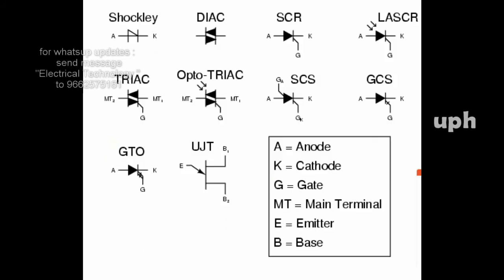Thyristor family includes: SCR (silicon controlled rectifier), DIAC (diode AC), TRIAC (triode AC), GTO (gate turn-off thyristors), MCT (MOS controlled thyristor), RCT, PUT, UJT, LASCR, LASCS, SIT, SITH, SIS, SBS, SUS, and EDC. All these devices together are called thyristors.